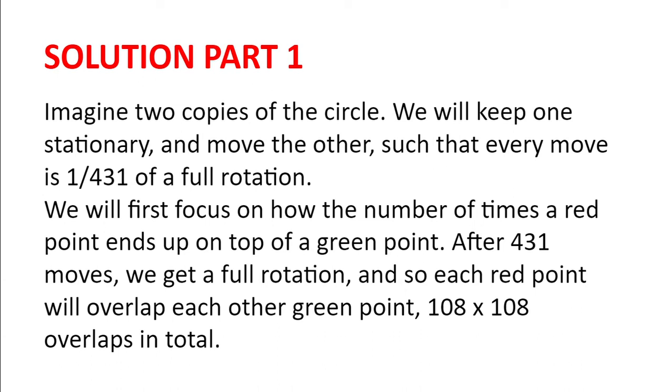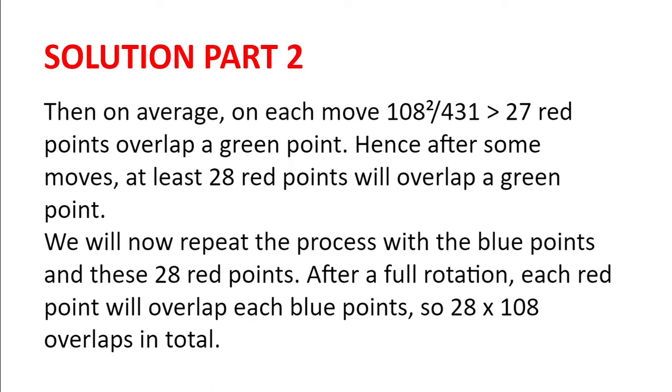After 431 moves, we will get a full rotation, and so each red point will overlap with each other green point, which is 108 squared overlaps in total. Then on average, on each move, 108 squared divided by 431 red points overlap a green point, which is just over 27.